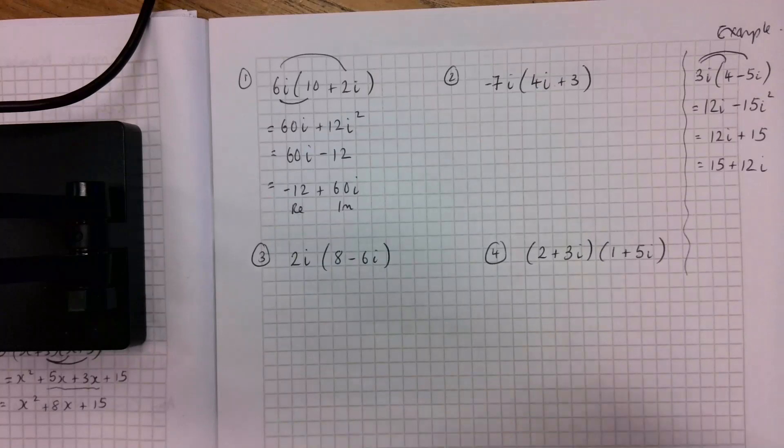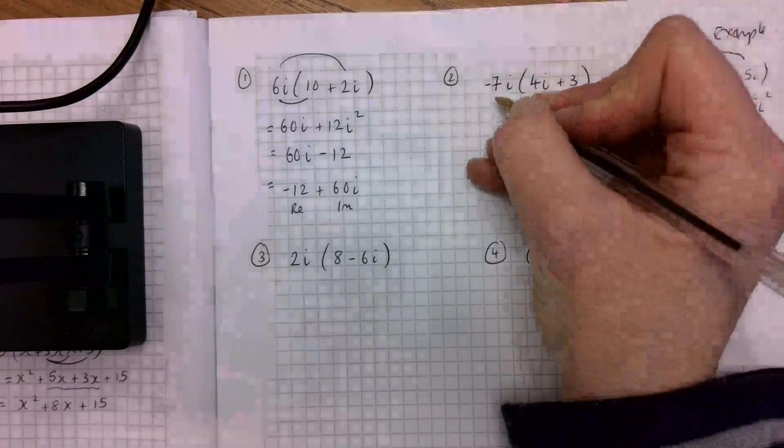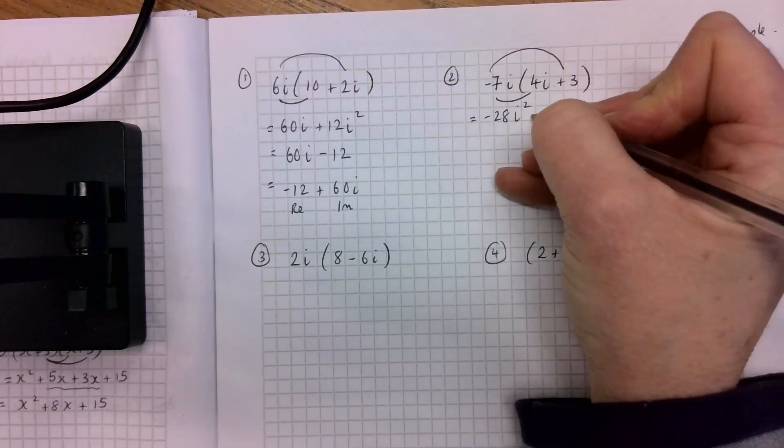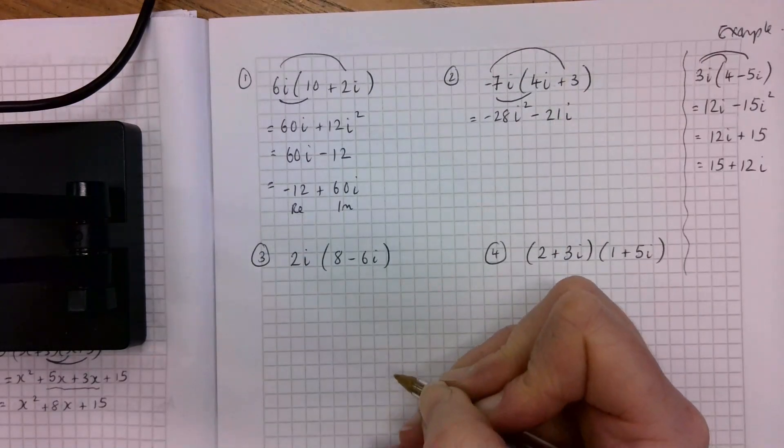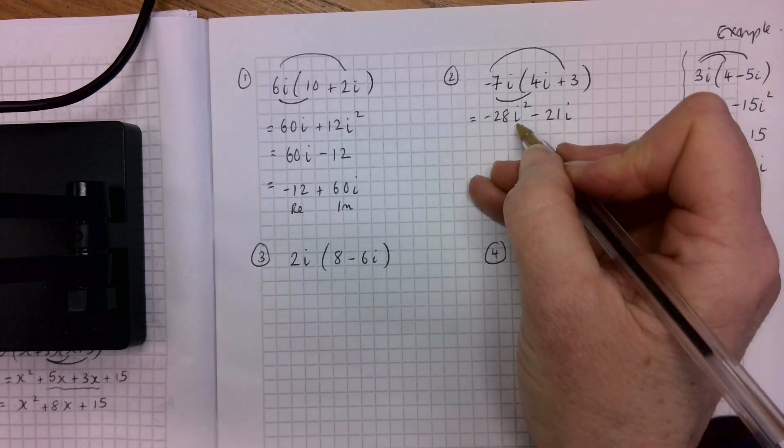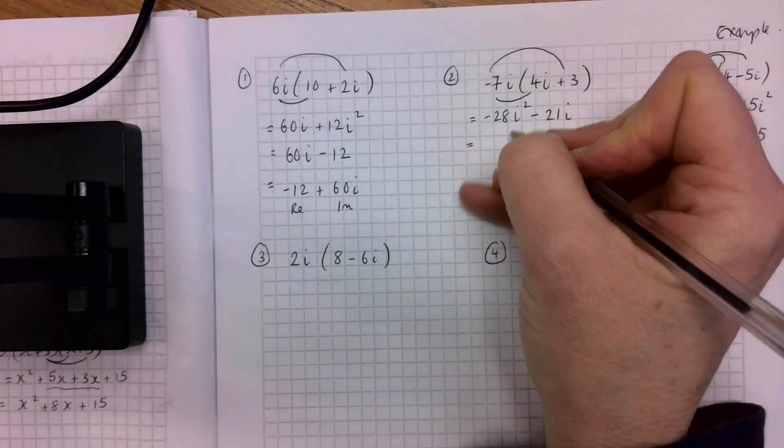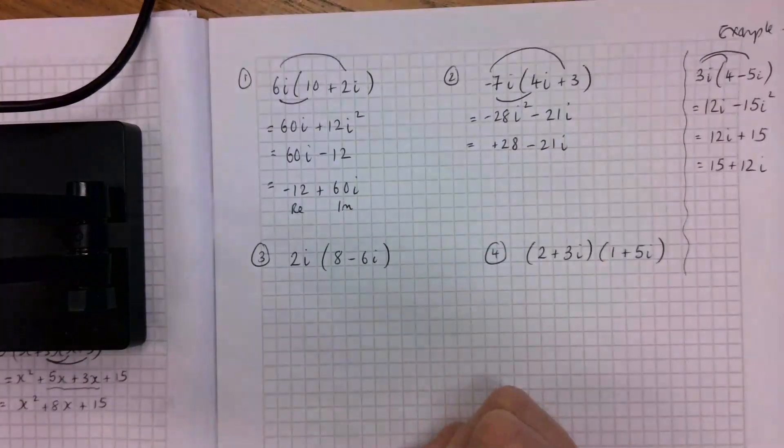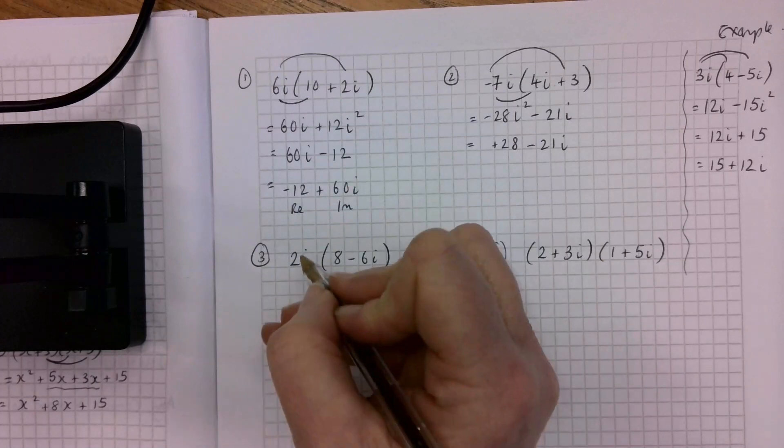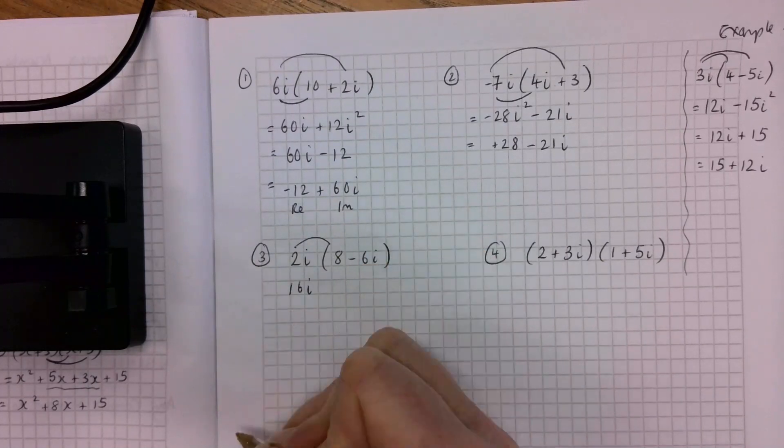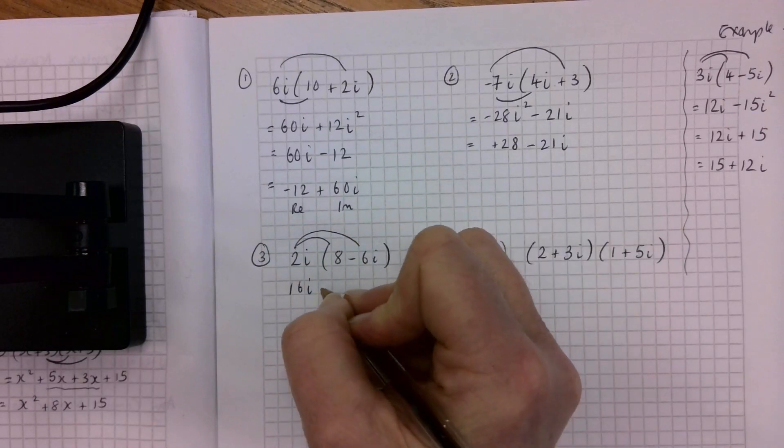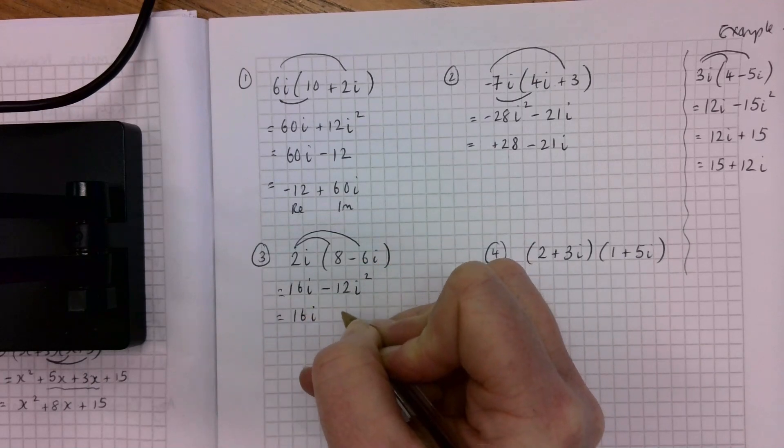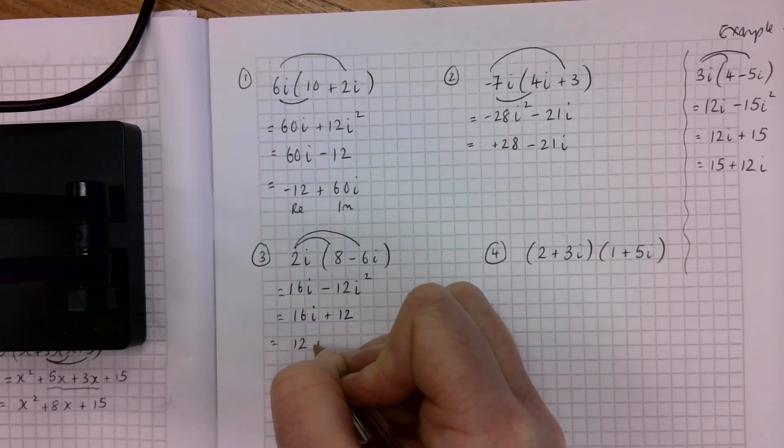The second one is going to be minus 7i by 4i is minus 28i squared and minus 7i by 3 is minus 21i. So don't forget, i squared is minus 1. So minus 28 becomes plus 28 minus 21i. 2i by 8 is 16i, and 2i by minus 6i is minus 12i squared. But i squared is minus 1, so that becomes plus 12. So that's going to be 12 plus 16i.